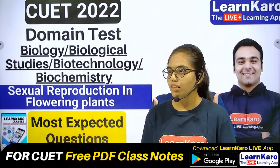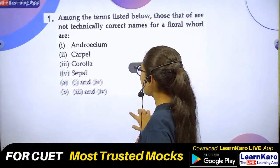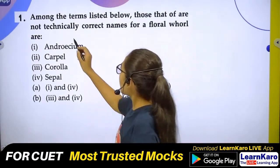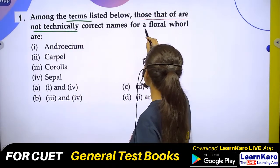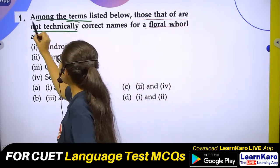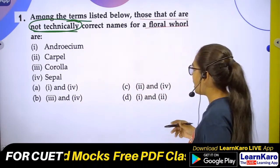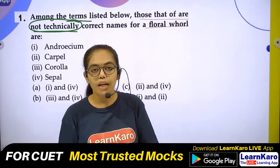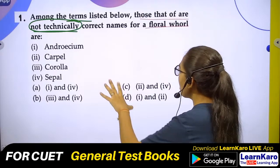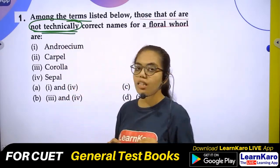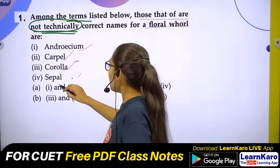Let's see the first question. Among the terms listed below, which are not technically correct names of the floral parts? The options given are: Androecium, Carpel, Corolla, and Sepals.